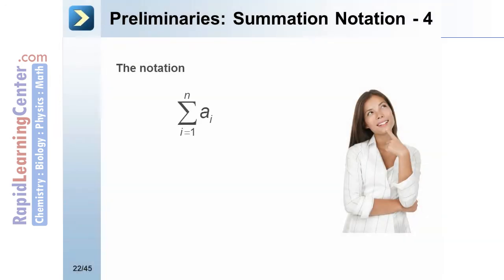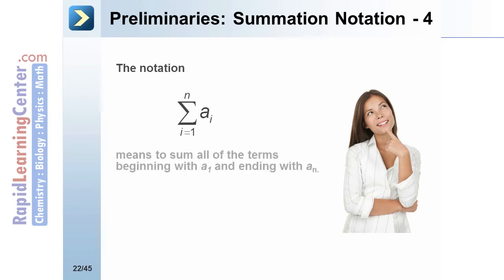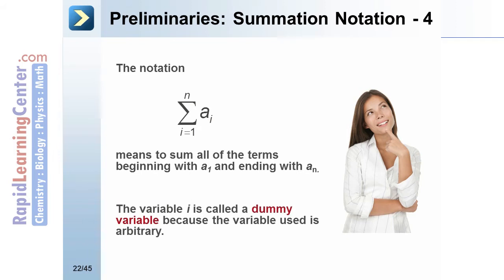The notation — the summation as i goes from 1 to n of a sub i — means to sum all of the terms beginning with a sub 1 and ending with a sub n. The variable i is called a dummy variable because the variable used is arbitrary.